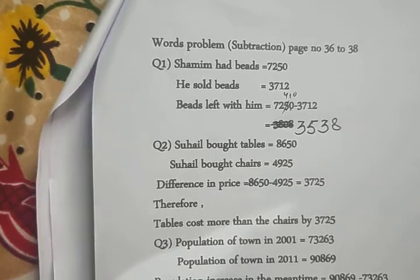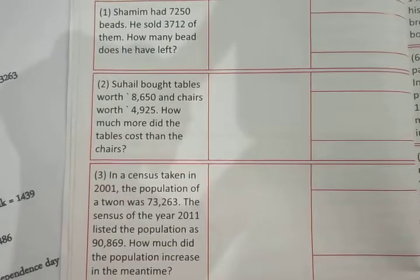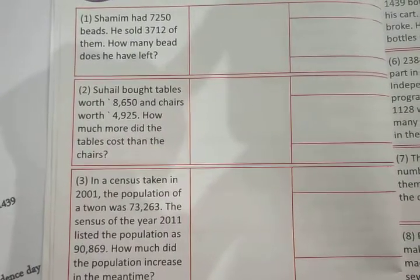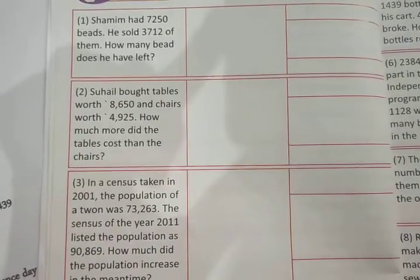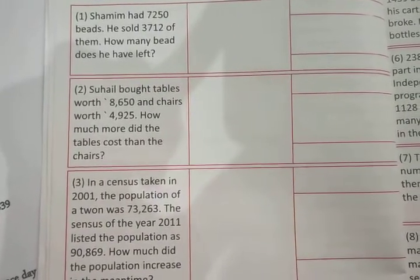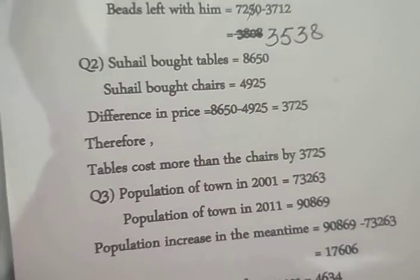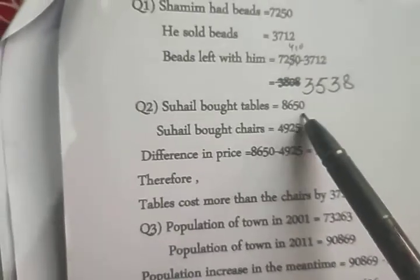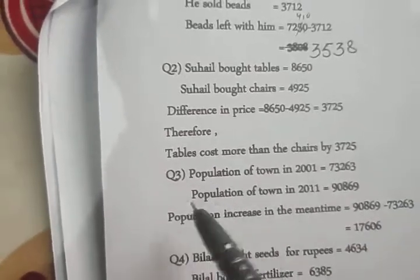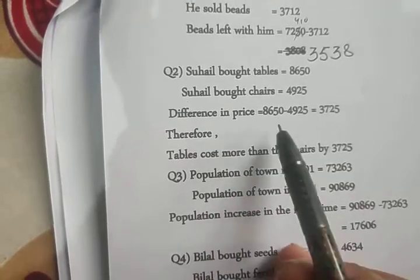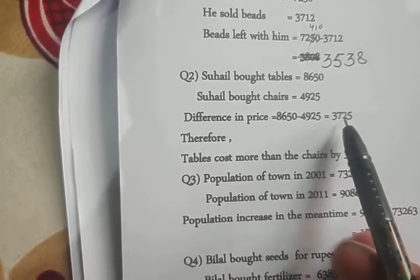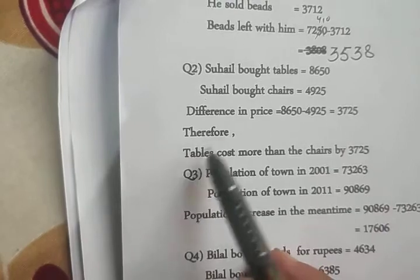The next question: he brought a table for rupees 8650 and brought a chair for rupees 4925. How much more does the table cost than the chair? Given in the question: table costs rupees 8650 and chair costs rupees 4925. The difference in price of the table and chair is 8650 minus 4925, which is 3725.